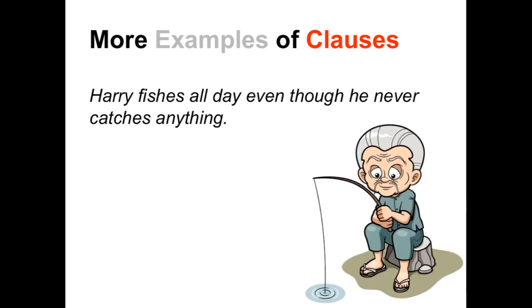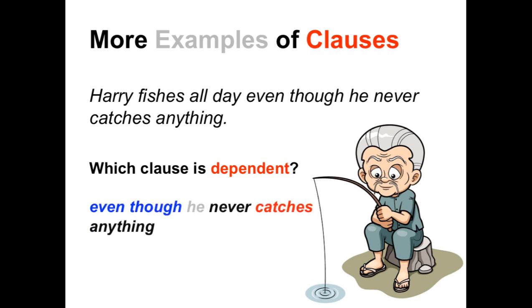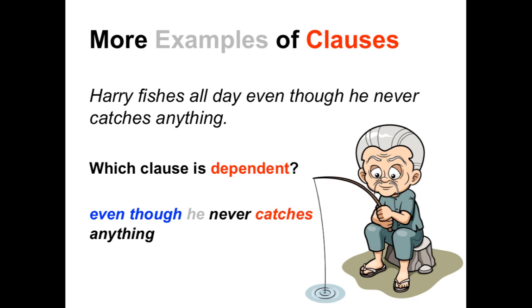Here are some more examples of clauses. 'Harry fishes all day. Even though he never catches anything.' Which clause in this sentence is dependent? First let's find the predicates. The first predicate is 'fishes' — who fishes? Harry. 'Harry fishes all day' is the first clause. But there's another predicate: 'catches.' Who or what catches? The pronoun 'he.' So 'he' is the subject of the second clause: 'even though he never catches anything.' Harry fishes all day expresses a complete thought, while 'even though he never catches anything' is the dependent clause because of the subordinating conjunction 'even though,' which makes it depend on the first clause.